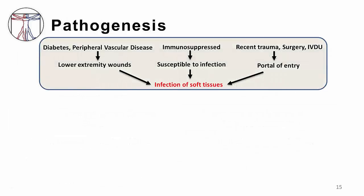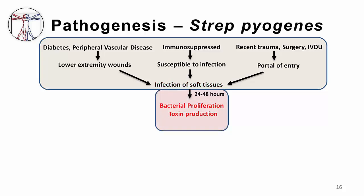Necrotizing infection begins in much the same way as every other skin and soft tissue infection, with a capable organism meeting a susceptible host. Patients with diabetes, vascular disease, immunocompromise, recent trauma or surgery, or ongoing injection drug use are all susceptible to soft tissue infections because these conditions are associated with a breach in the skin surface and/or a reduced ability to fight off infection. Let's focus on group A strep, or Strep pyogenes infection.